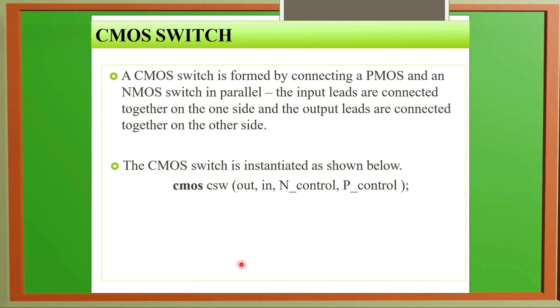For a CMOS switch, we form it by using PMOS and NMOS connected in parallel. The input leads are connected together on one side and output leads are connected together to the other side. I will attach one diagram for this CMOS inverter. The CMOS switch syntax is: CMOS CSW out, in, control N, control P.